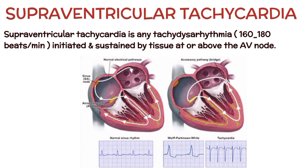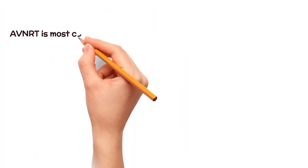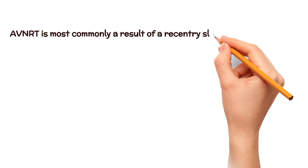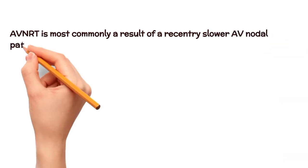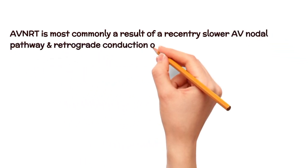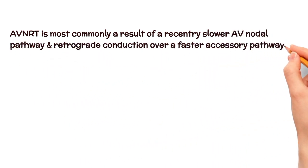AV nodal reentrant tachycardia (AVNRT) is the most common type of SVT and accounts for 50% of diagnosed SVT. AVNRT is most commonly a result of reentry via a slower AV nodal pathway and retrograde conduction over a faster accessory pathway.